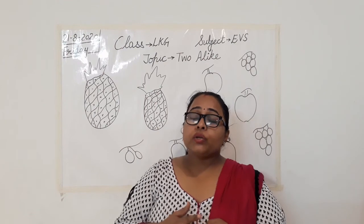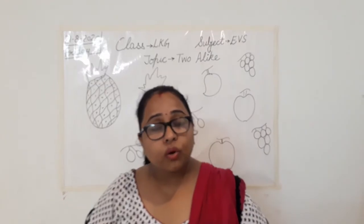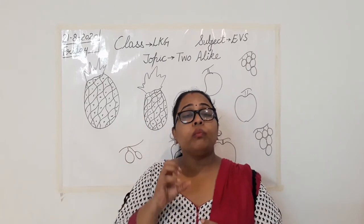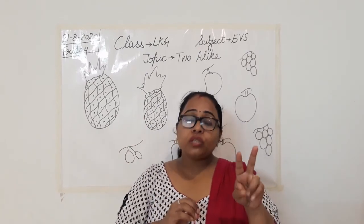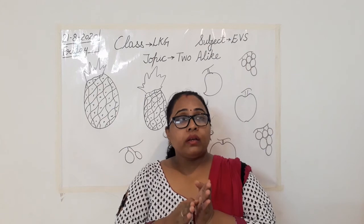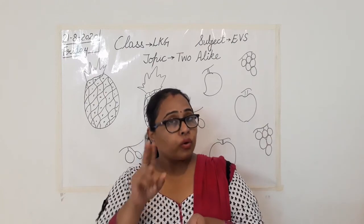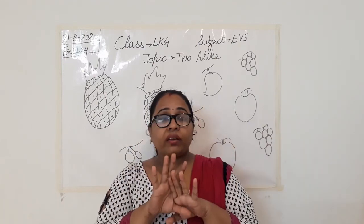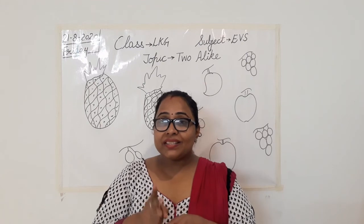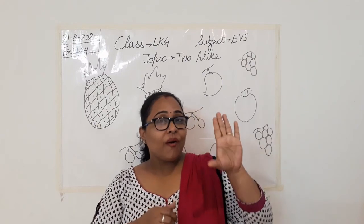So what we are going to do today? Today we are going to learn about two alike — similar-looking objects which we need to pair up. What is the meaning of pair? To join them, to make a pair of them. When we join two things, they make a pair. For example, your shoes — we call them a pair of shoes because there are two. Pair of gloves — one for each hand — and they both look alike.